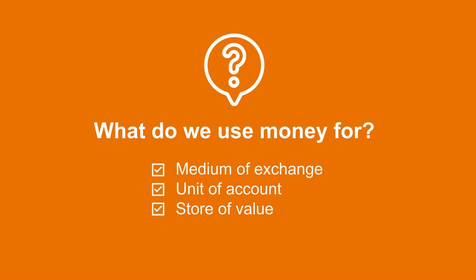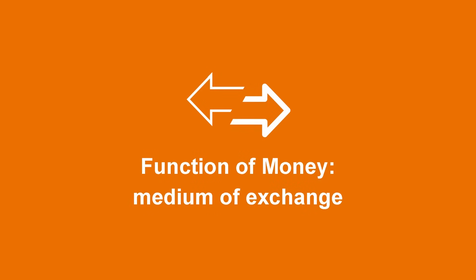Now that we have defined what money is and learned the differences between fiat and commodity money, let's talk about the characteristics or functions of money. First, ask yourself this question: what do I use money for? The first answer that likely pops up in your head is that you use money to buy stuff. So one of the main functions of money is that it is a means of payment, or medium of exchange.